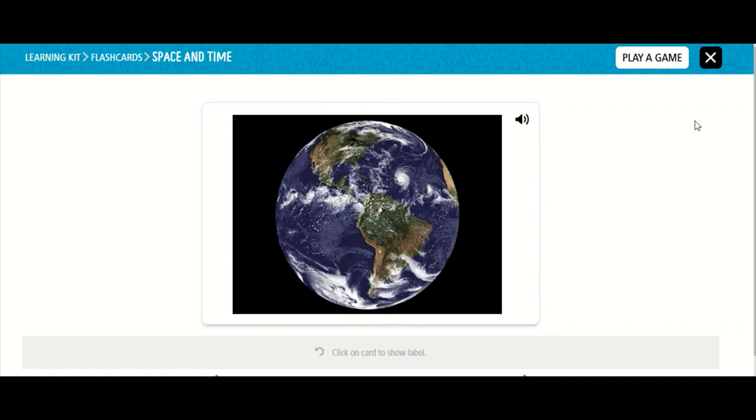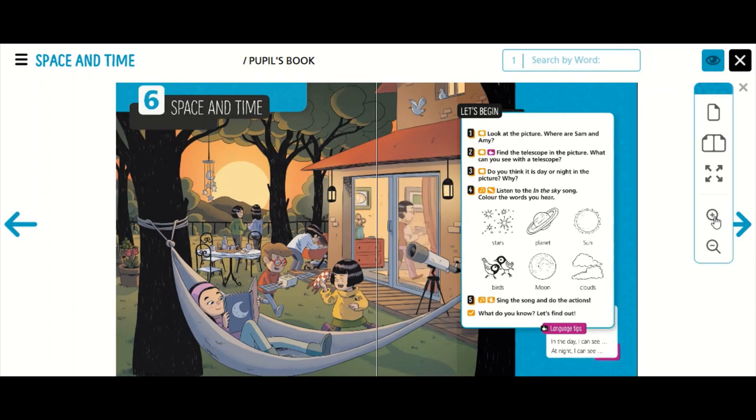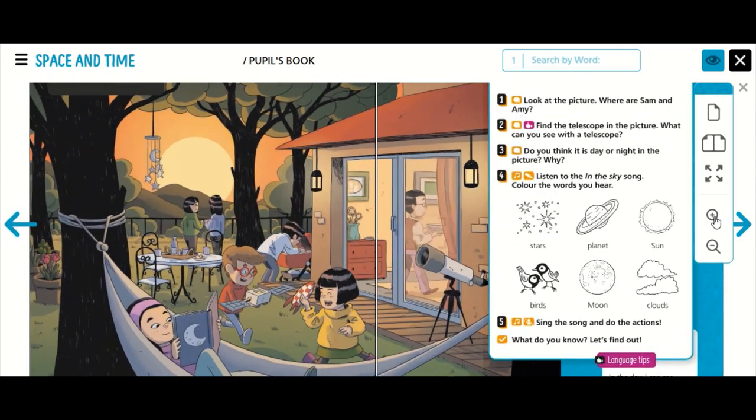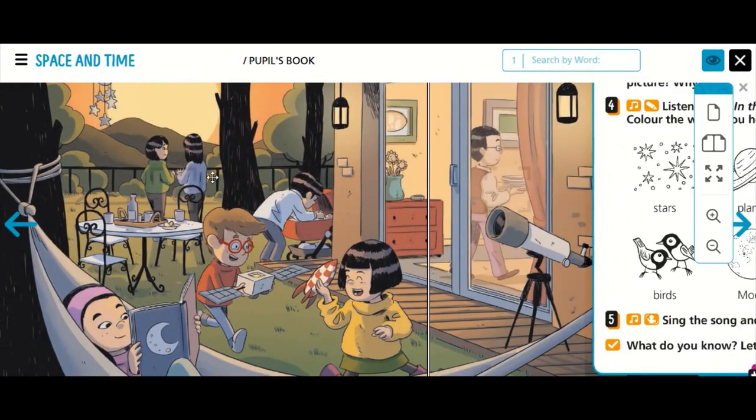So now we can go back to our book and see the picture. Remember, what can you see in the picture? OK, I would like that you pay attention to Sam and Amy. What are they doing? They are playing with toys.